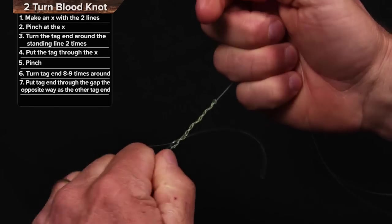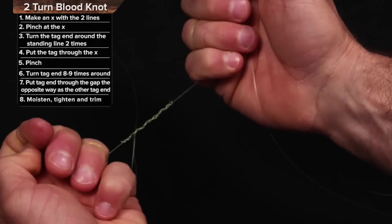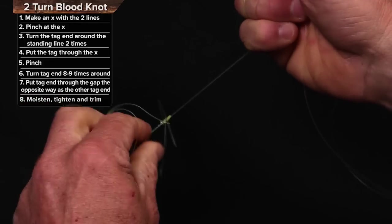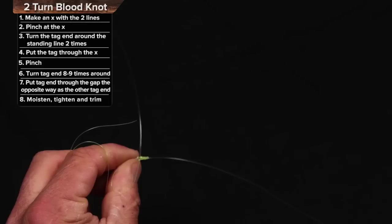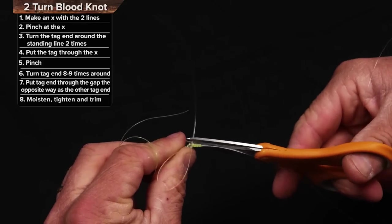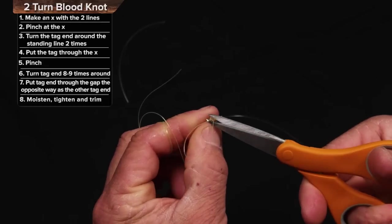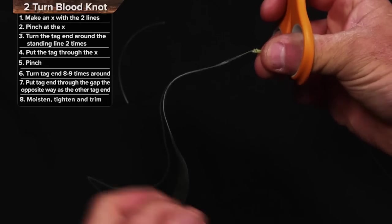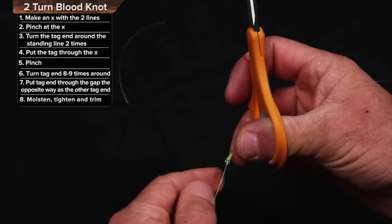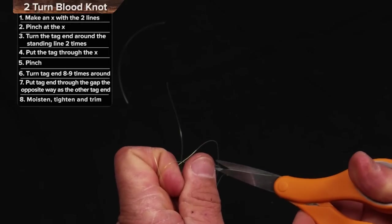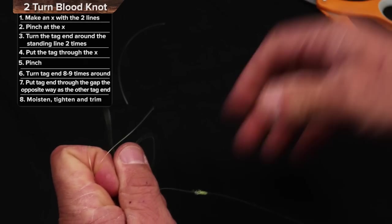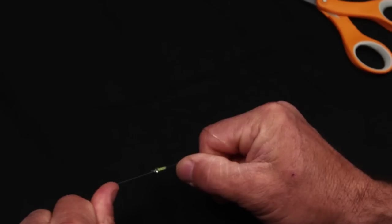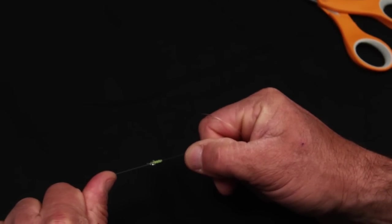I'm going to lubricate that and then I'm going to draw it all down at one time. Ready? One, two, three. Just like that. Trim off the tags. The third tag right here. There's the two turn blood with fluorocarbon.